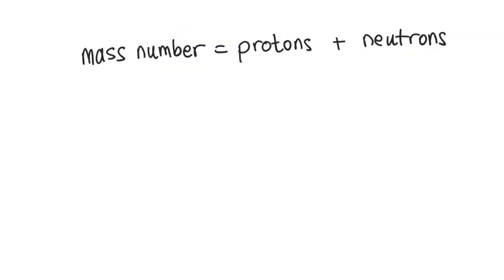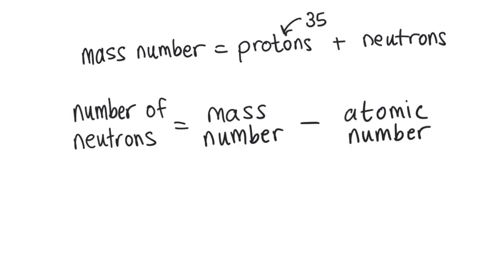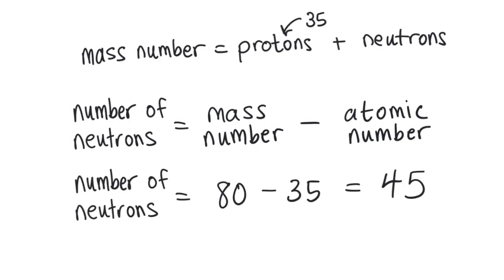The mass number 80 is the number of protons and neutrons added together. Since we already know the number of protons, 35, we can subtract that from the mass number. So the number of neutrons is the mass number minus the atomic number. And for bromine that comes out to 45 neutrons.